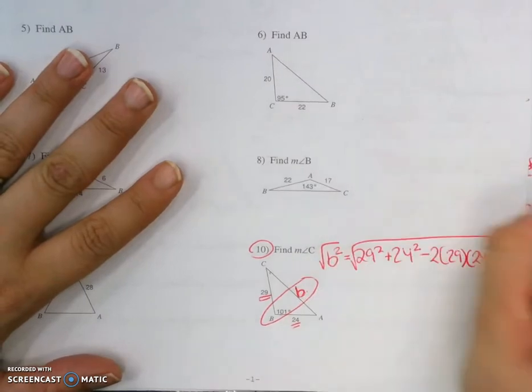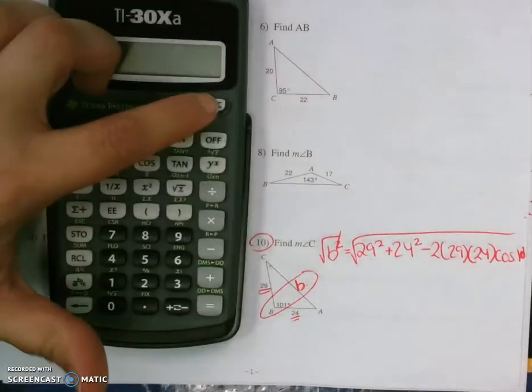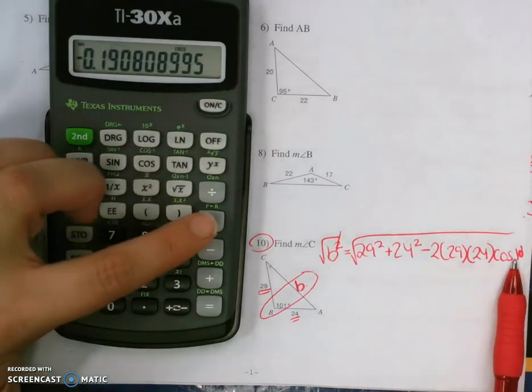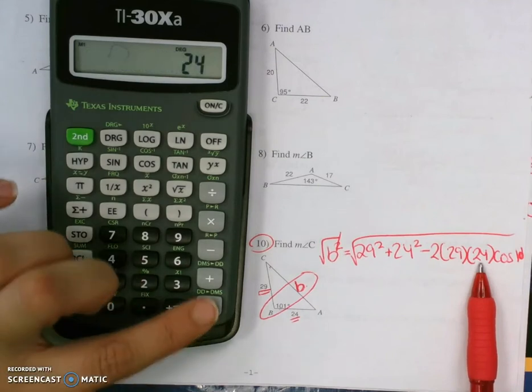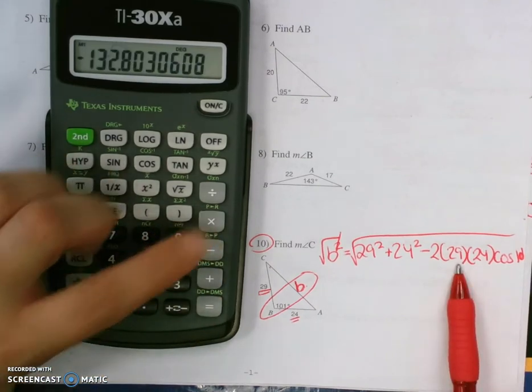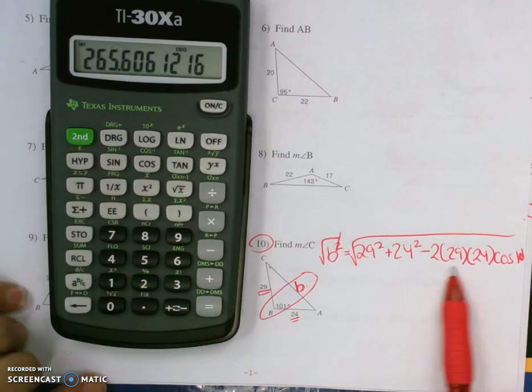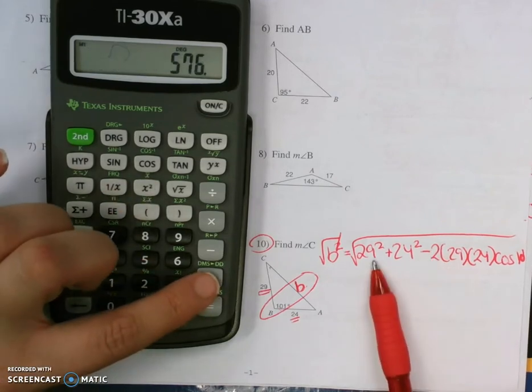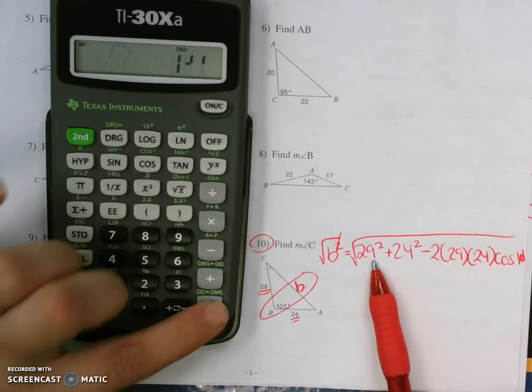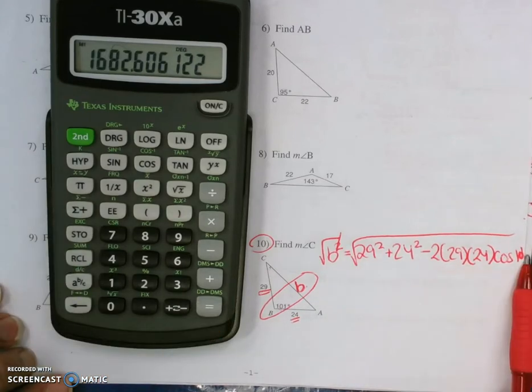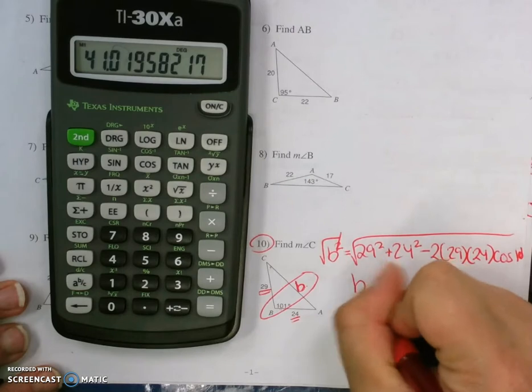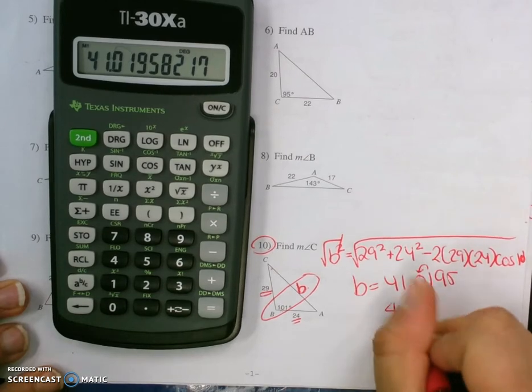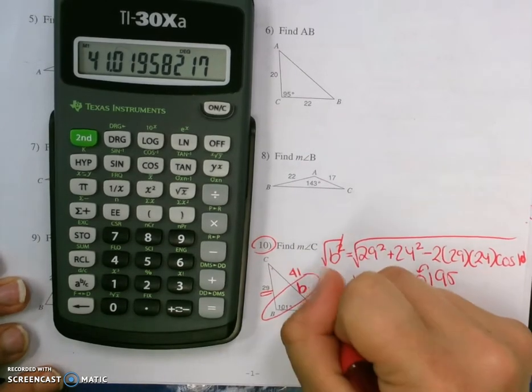So in this problem, I just take the square root to solve for B. I'm going to start here at cosine 101. So I'm going to do 101 cosine times 24 times 29 times 2 negative button equals, now I have all of this plus 24 squared plus 29 squared equals.